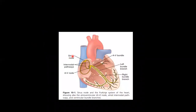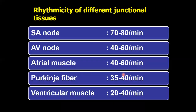This figure shows all the Junctional Tissues — the sinus node, internodal pathways, AV node, and bundle branches of His. This table shows the impulse conduction rate of different Junctional Tissues: SA node 70 to 80 per minute, AV node 40 to 60 per minute, atrial muscles 40 to 60 per minute, Purkinje fibers 35 to 40 per minute, and ventricular muscle 20 to 40 per minute.